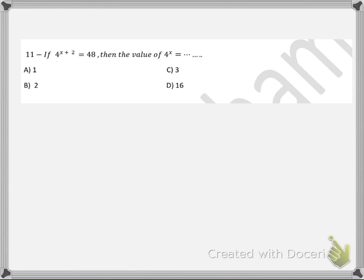For Question 11: 4 to the power of x plus 2 equals 48, then the value of 4 to the power of x. Notice that 4 to the power of n cannot be 48, because for example, 4 power 2 is 16, 4 power 3 is 64. So there isn't any integer which gives 4 to the power of that integer equals 48.